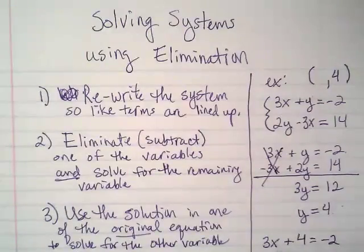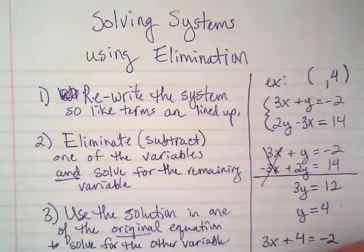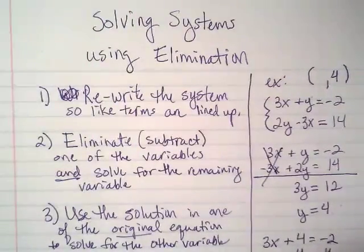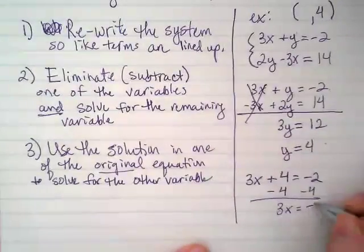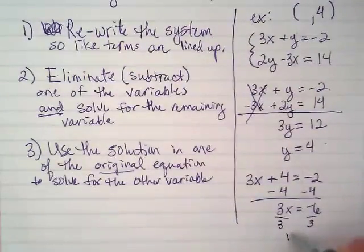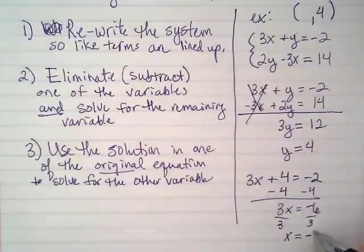And now I'm going to solve this equation for x. Subtract 4, we get 3x is equal to negative 6. Divide by 3. x equals negative 2.